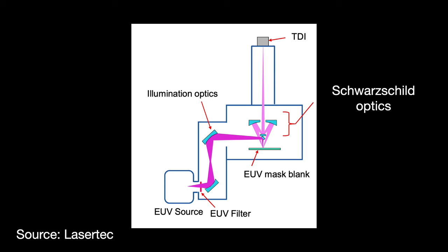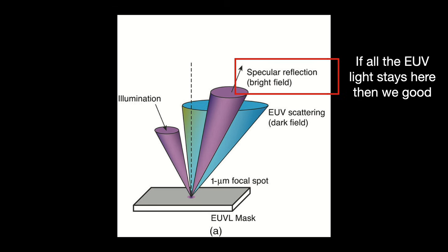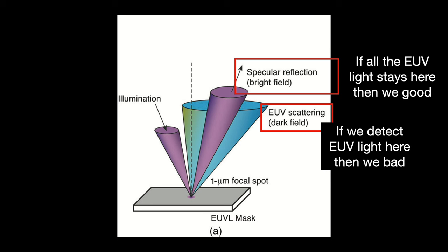There is an EUV light source that reflects off a set of EUV mirrors and illuminates onto a small portion of the blank, about a square micrometer large. The blank naturally reflects the light back. If there is no defect, then all of the reflected light stays in what is called the bright field. But if there is a defect, then that defect scatters the light, causing it to enter what is called the dark field. If your dark field scanners pick up any EUV photons, then you know your blank has a defect.